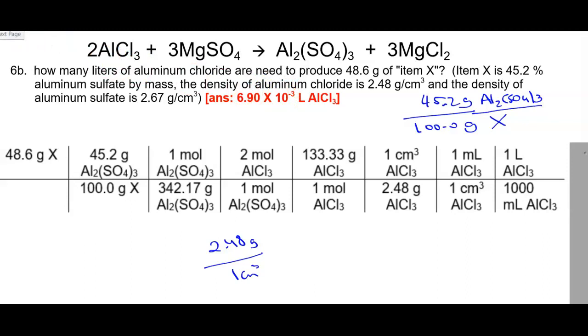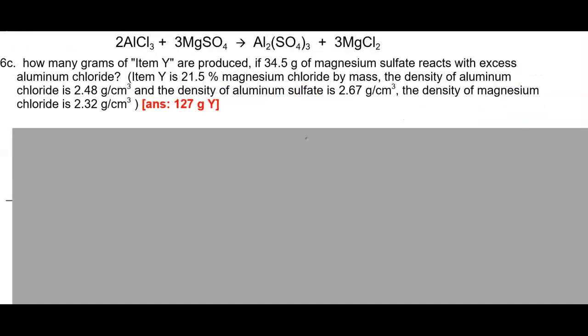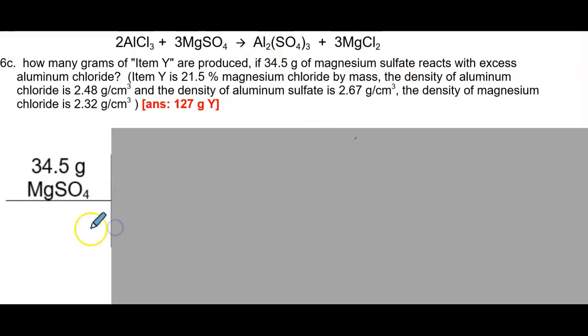Looking at Example 6C: how many grams of item Y are produced if 34.5 grams of magnesium sulfate reacts with excess aluminum chloride? Item Y is 21.5% magnesium chloride by mass. We have several densities. Since we have a mass, we know we're going to start with magnesium sulfate — 34.5 grams. We're trying to get to item Y, which is not in the reaction directly, so we must figure out what item Y is part of.